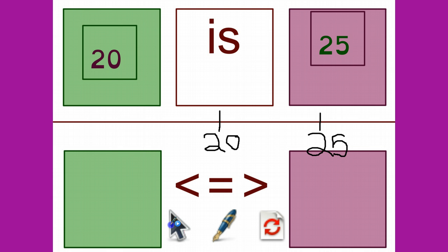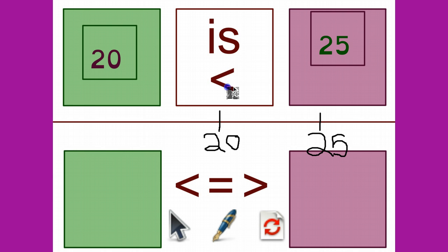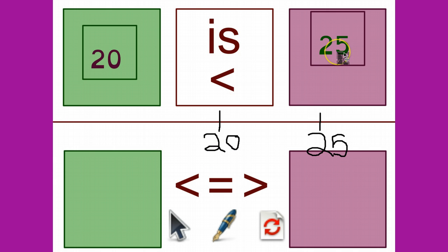So how am I going to read this? 20 is less than 25. Which symbol stands for less than? If you pick this one, you're correct. The little end points to the smaller number, and the big end points to the bigger number. Read the sentence with me: 20 is less than 25.